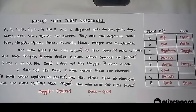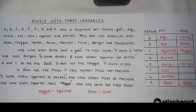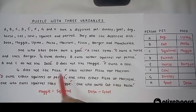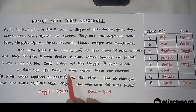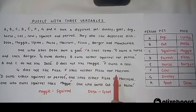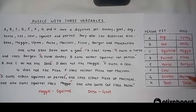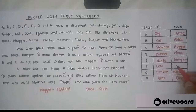All animals have now been placed, so we just have 3 food boxes remaining to fill. G does not like Pizza, and F likes neither Pizza nor Macaroni. So Pizza is not liked by G or F — which means D likes Pizza. F also does not like Macaroni, so G will like Macaroni. That leaves F liking Manchurian. All food items are now resolved.